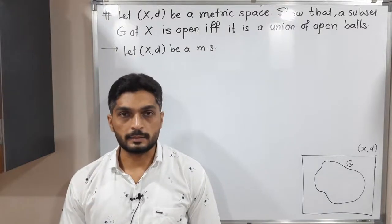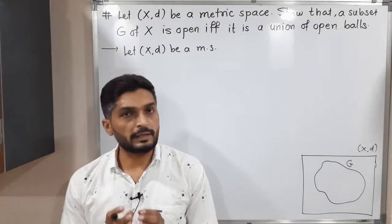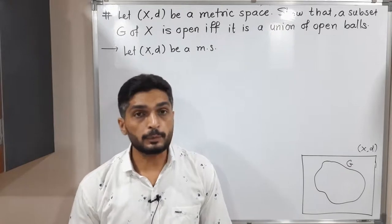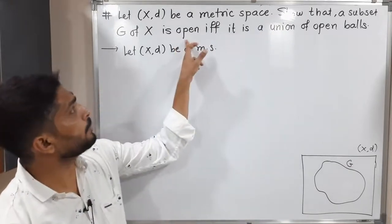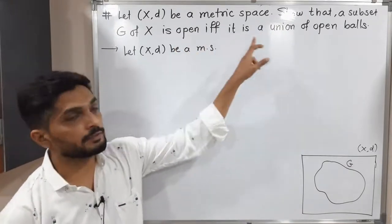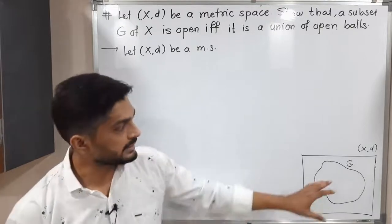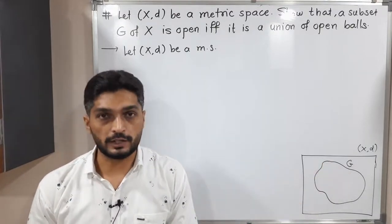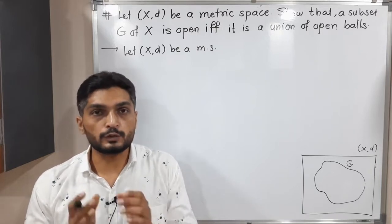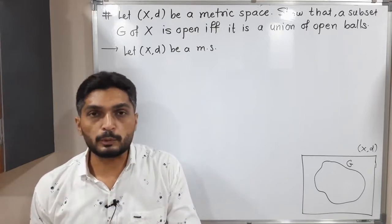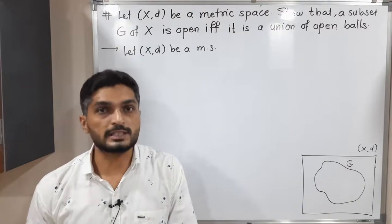Let us discuss this result. In this result, we have a metric space X and we have to prove that G, any subset of X, is open if and only if it is a union of open balls. So I have considered set G here, which is a subset of X. Since it is an if-and-only-if, we have to assume one part, prove the second part, and then prove its converse.